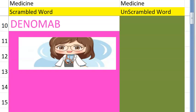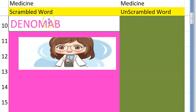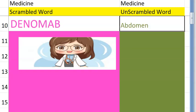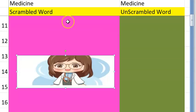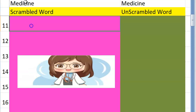The tenth one — it starts with A, it's a part of our body anatomy — your stomach area — abdomen. Very good! We are done with 10. Our goal is to look at 60 of these.